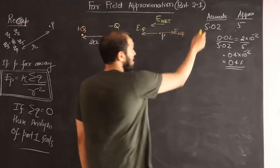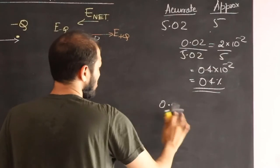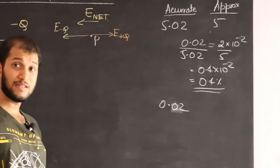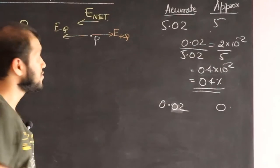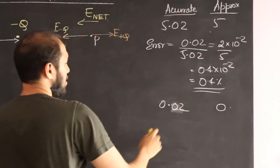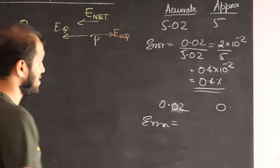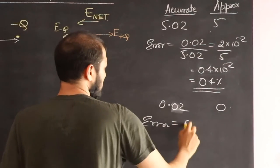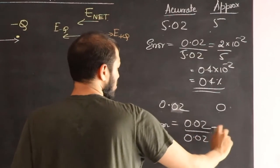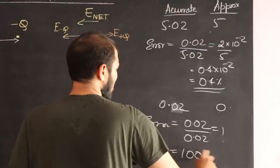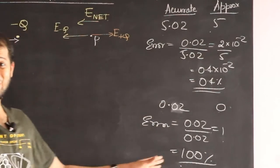But now imagine the accurate value is 0.02. And let's say our approximation gives us the answer as 0. So this was our error. Now what is the error? Now the error is, you take the difference, it's 0.02, divide by the actual value, 0.02, it's 1, and that is 100% error. And you can't live with a 100% error.